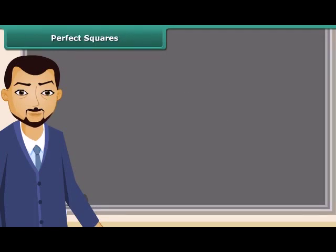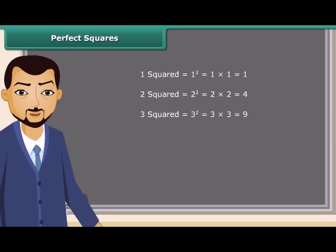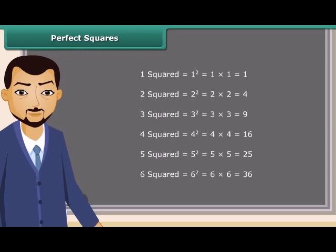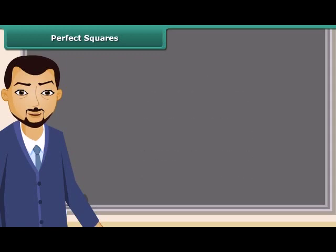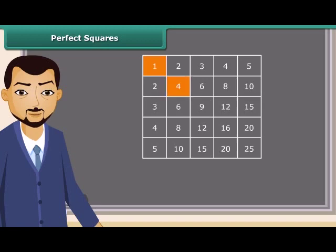Let us read: 1 square is 1, 2 square is 4, 3 square is 9, 4 square is 16, 5 square is 25, and so on. We can also find squares on the multiplication table. Do you know what do we call these numbers? They are called perfect squares. The perfect squares are the squares of the whole numbers.